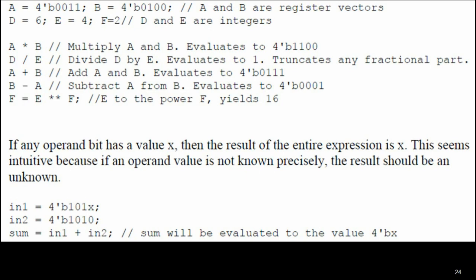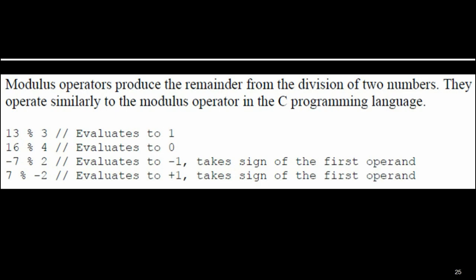This is because if an operand value is not precisely known, the result should be unknown. Note: this is not a bitwise operation — if any one bit is X or unknown, the entire result will be X, an unknown value. We cannot determine the other bits. Next, the modulus operator produces the remainder from the division of two numbers.